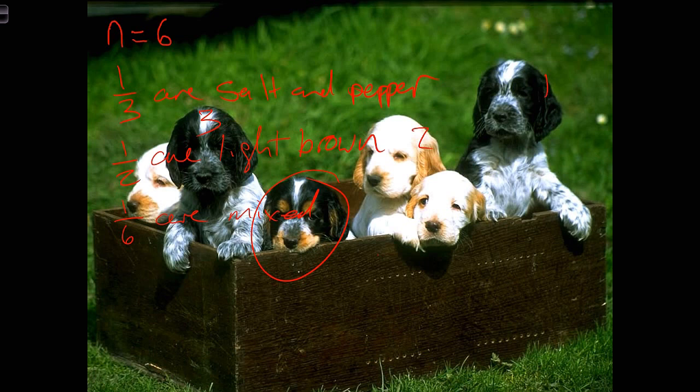Remember, in inferential statistics we are trying to use a sample to make a statement about the population. Here our sample is these six puppies, and the population might be all the puppies in the world, or all the puppies of this breed. Using common sense, can we use this sample of puppies to make a statement about all the puppies in the world of this breed?